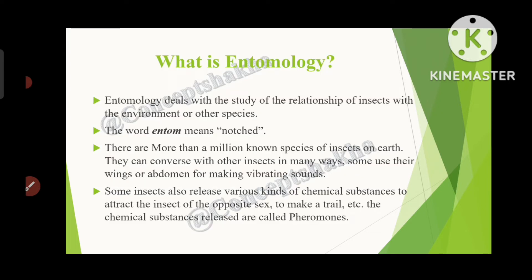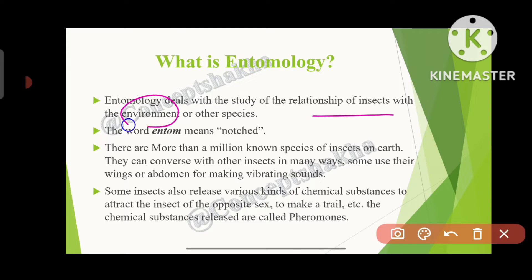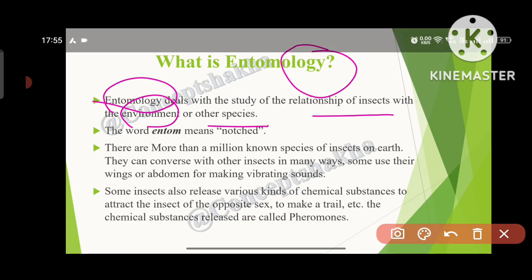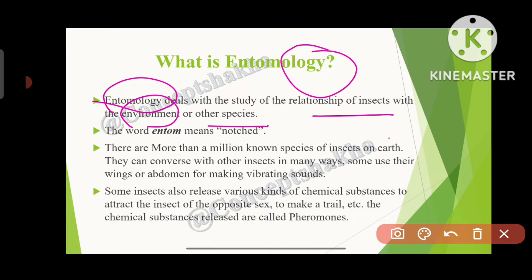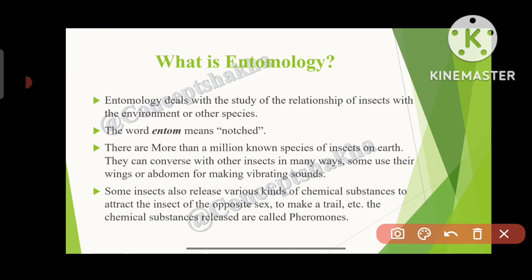First of all, what is entomology? Entomology deals with the study of the relationship of insects with the environment and other species. The word 'entom' is related to insects, and the suffix means 'study of.' The word 'entom' also means 'to be notched' or 'notched.'